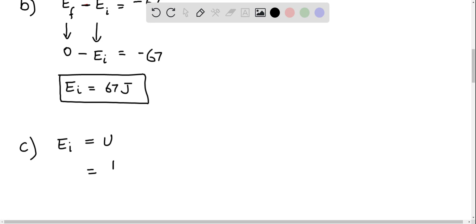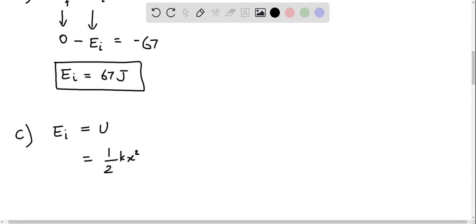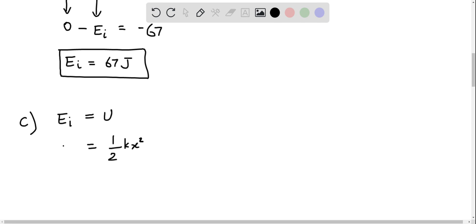And the potential energy of the spring is given by the formula (1/2)kx squared, where x is the change in length of the spring, in this case the compression. And that is equal to 67 joules.